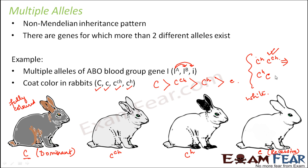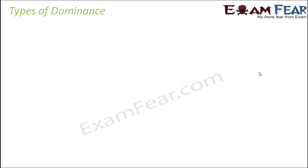If the genotype is C^H / c, then C^H is more dominant, so it will dominate and the Himalayan phenotype will be expressed. In summary, multiple alleles exist for quite a few genes, and this concept came after Mendel — Mendelian laws of inheritance do not cover multiple alleles.